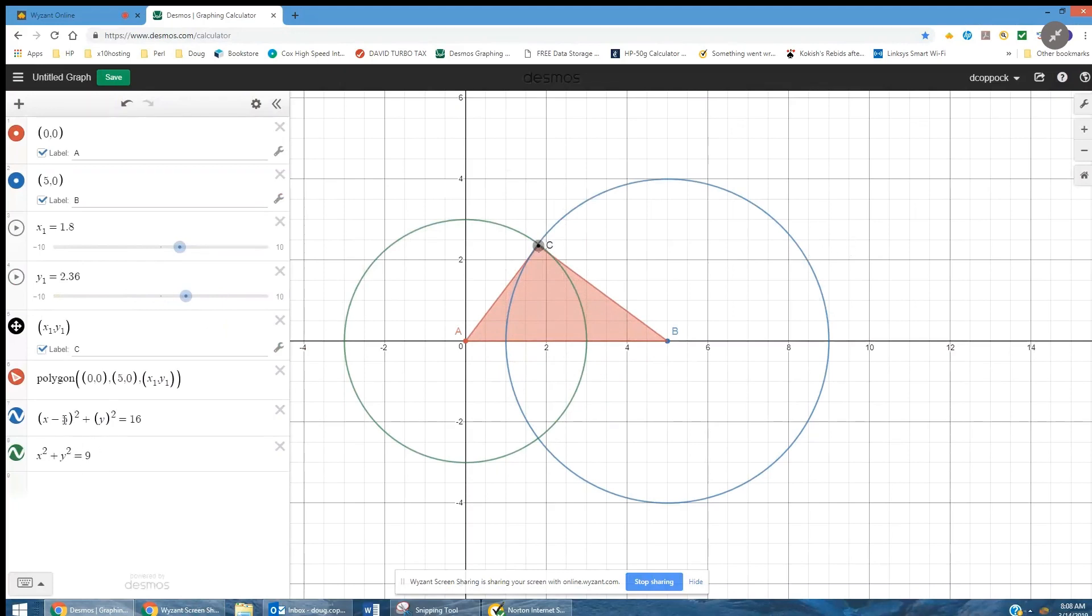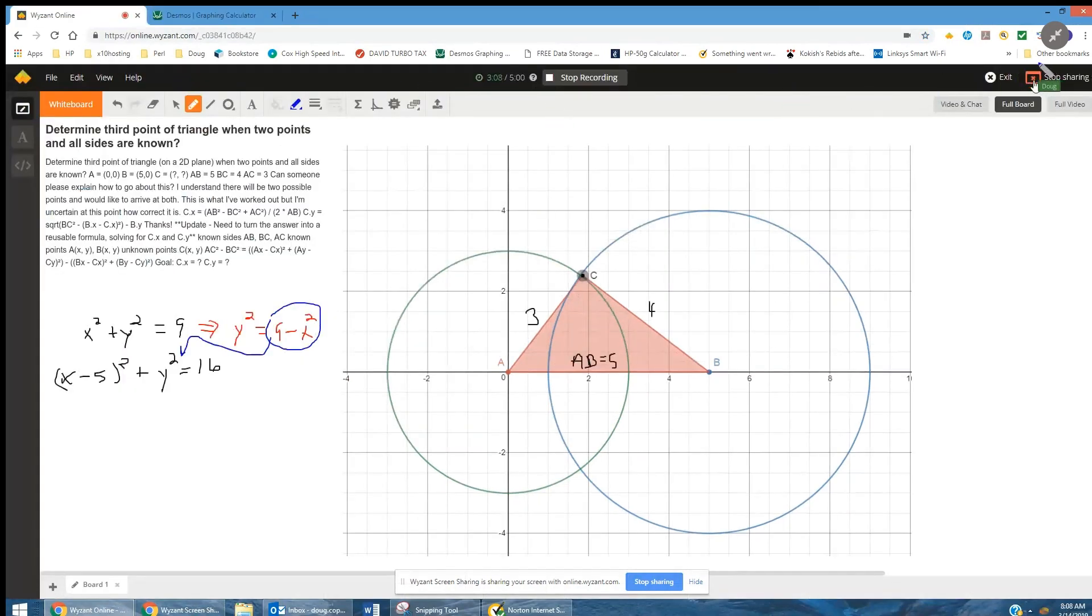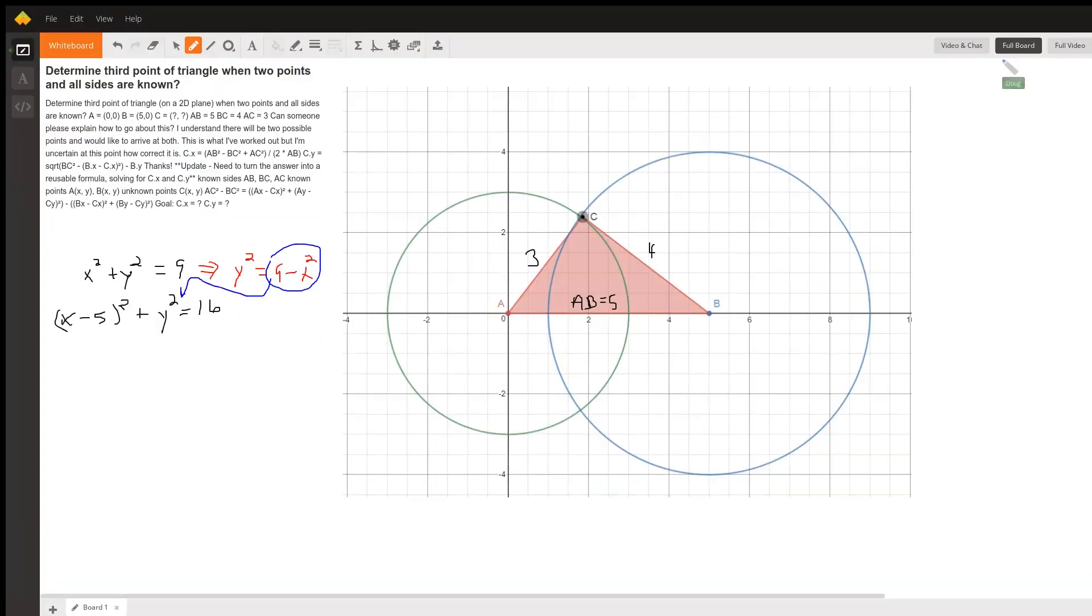And there's the two equations we could end up going back and solving this. X squared minus 10X plus 25 plus 9 minus X squared equals 16.